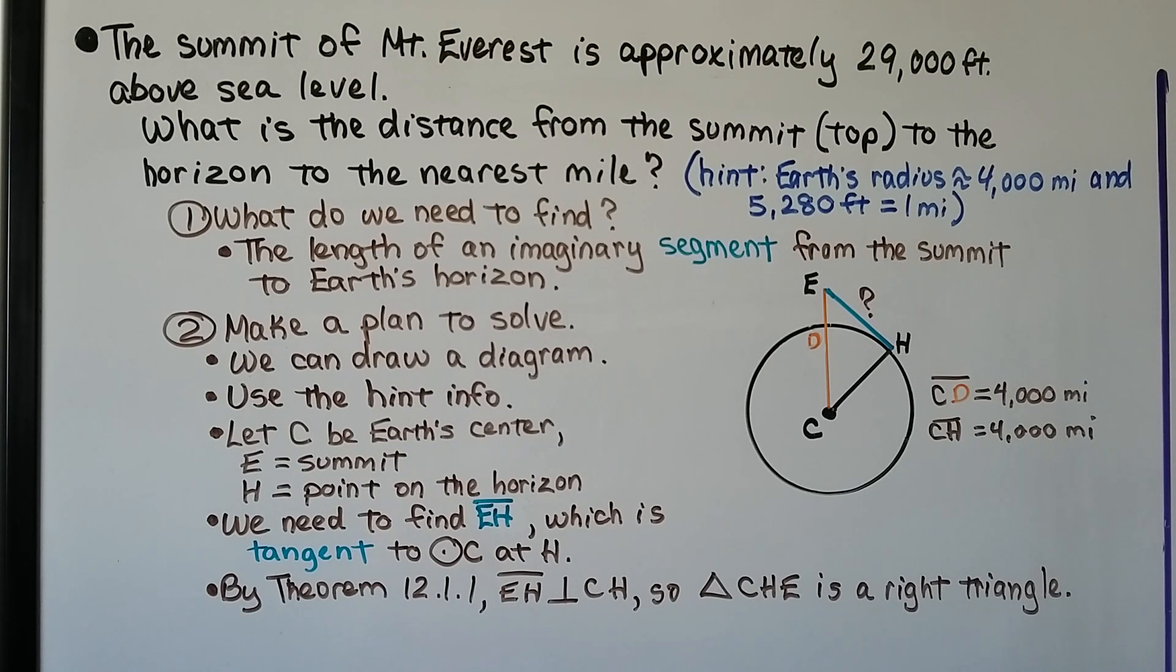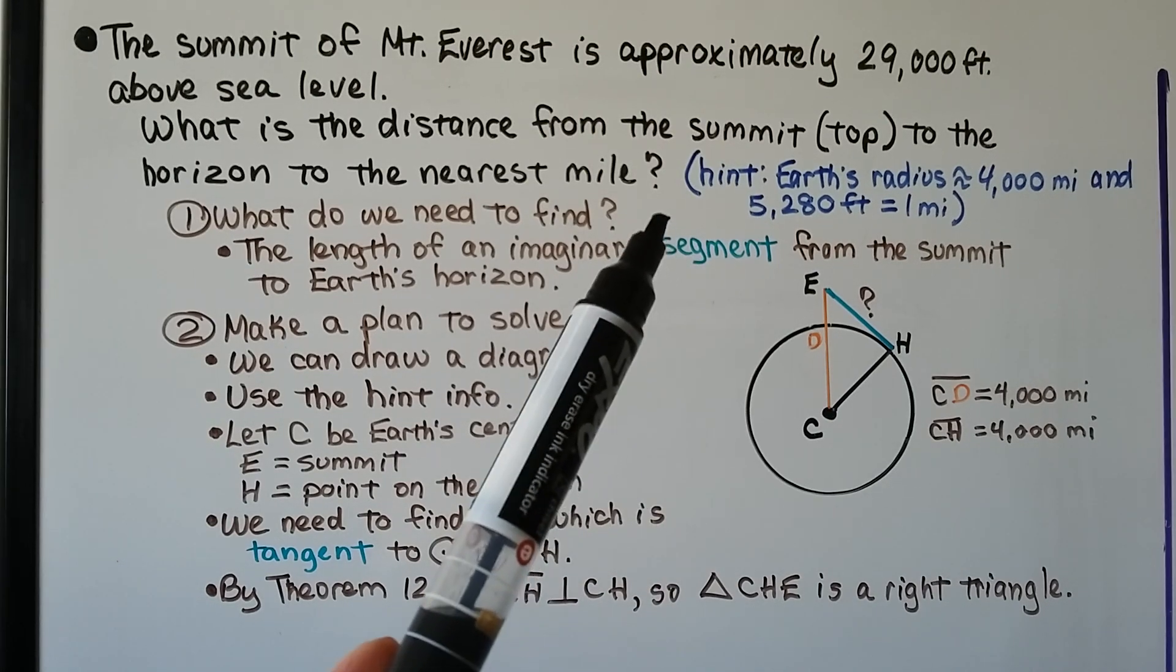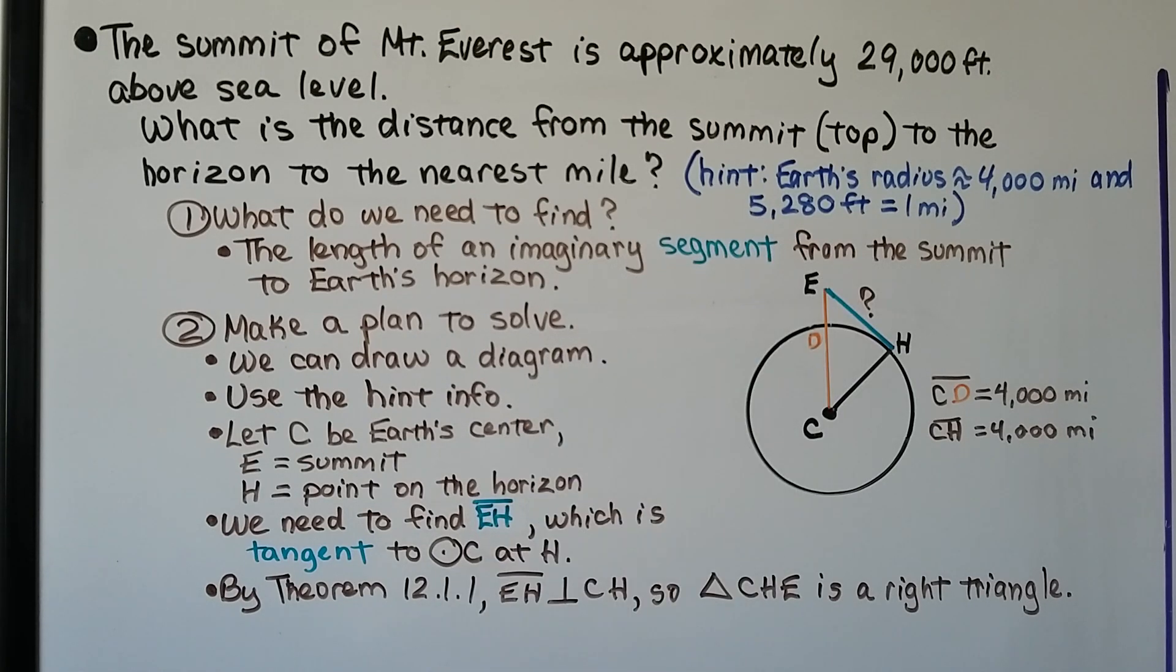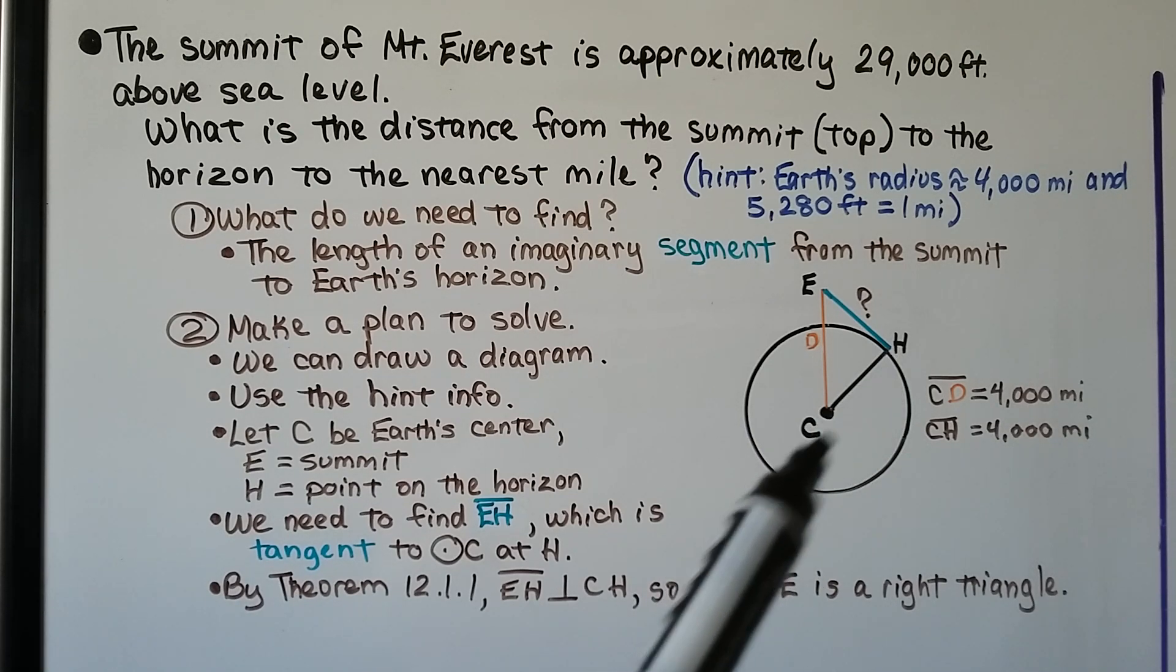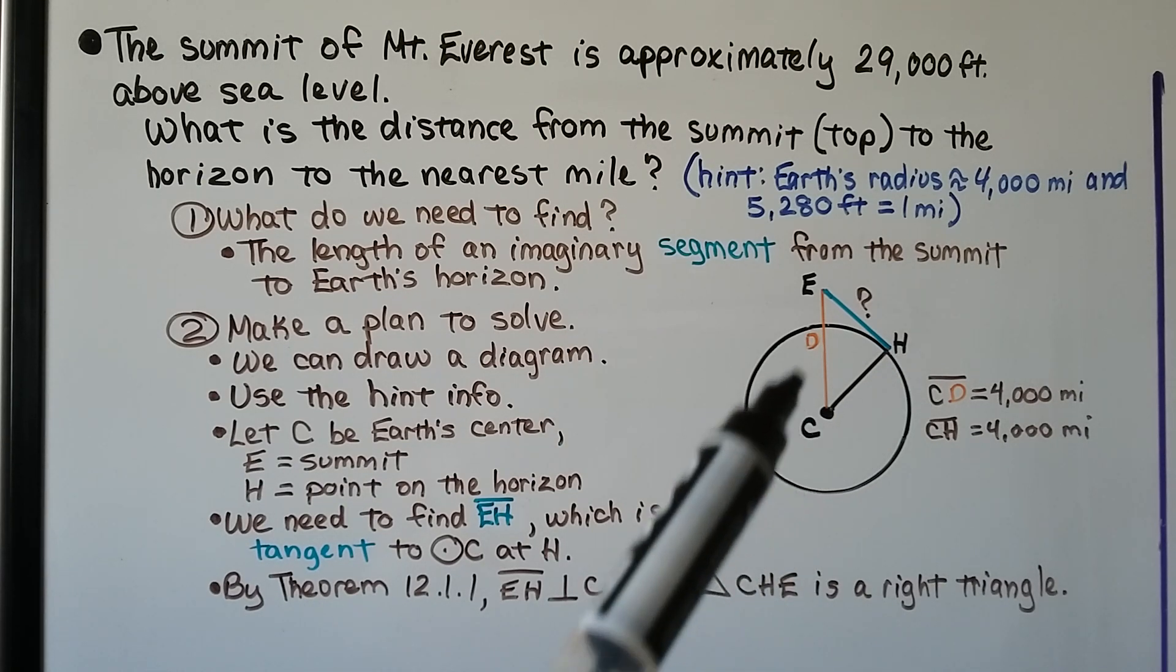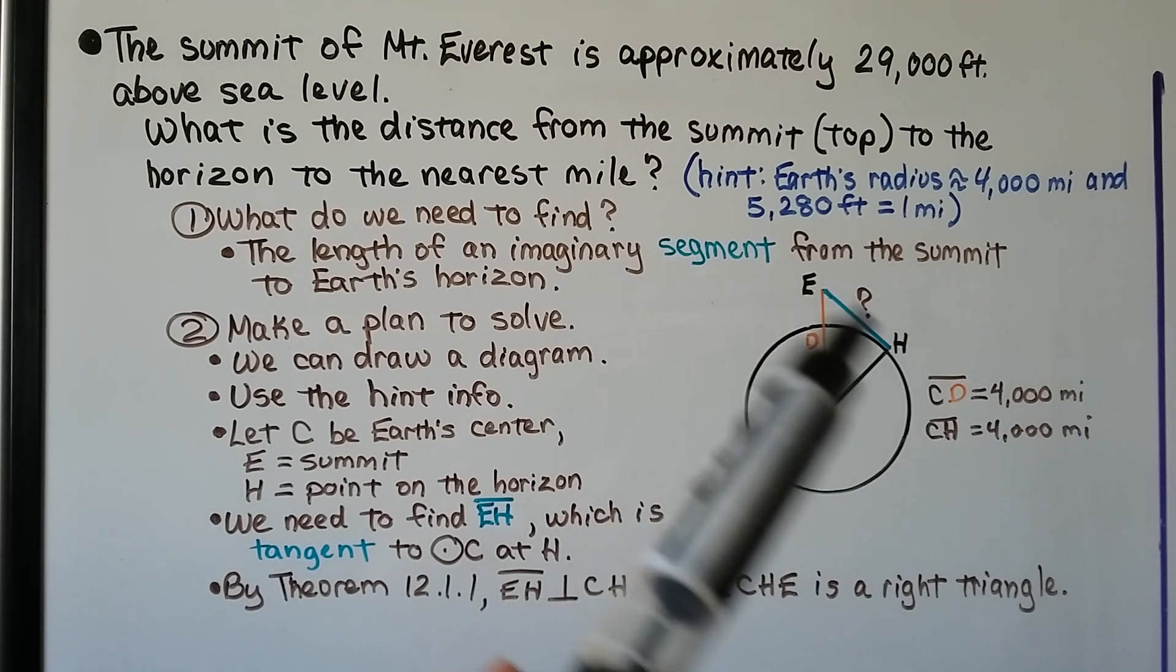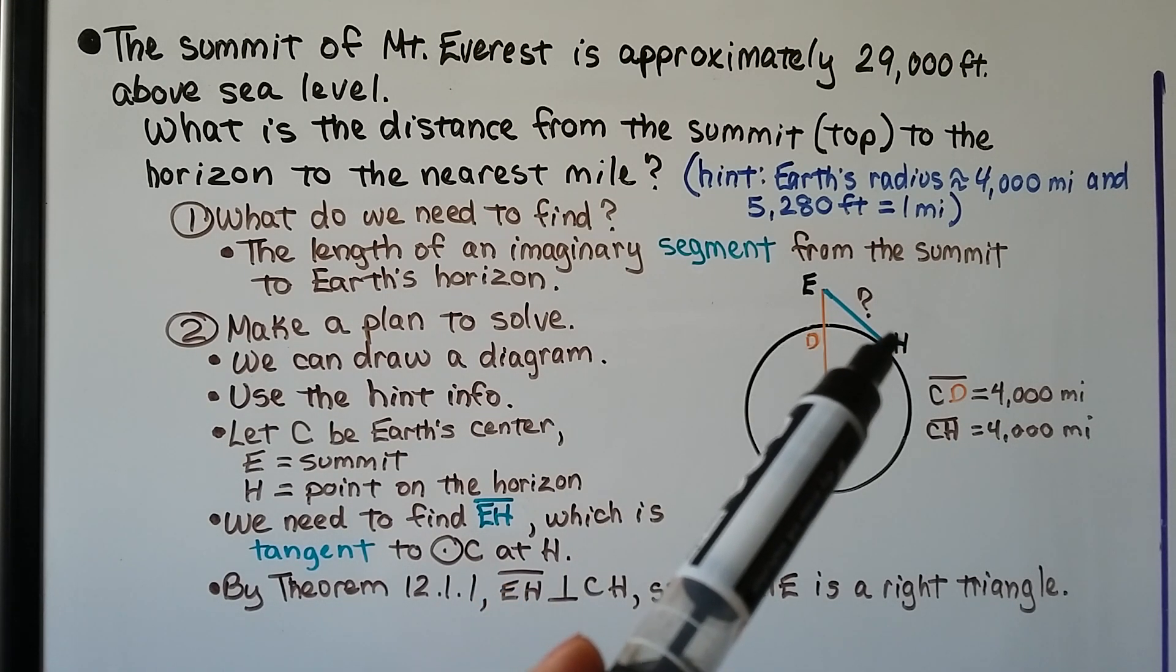The summit of Mount Everest is approximately 29,000 feet above sea level. So what's the distance from the summit, that's the top, to the horizon to the nearest mile? It's giving us a hint that Earth's radius is about 4,000 miles and that 5,280 feet is a mile. Here is the distance from the center to the horizon. This segment, EH, is what we're looking for. The length of an imaginary segment from the summit to Earth's horizon.